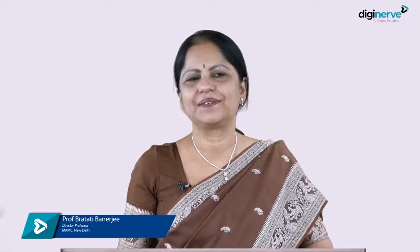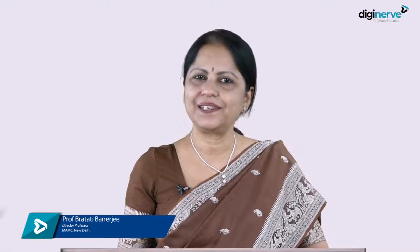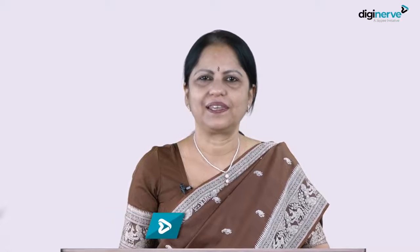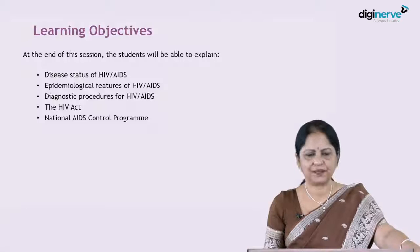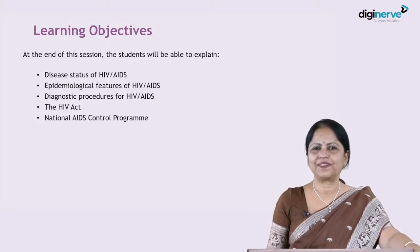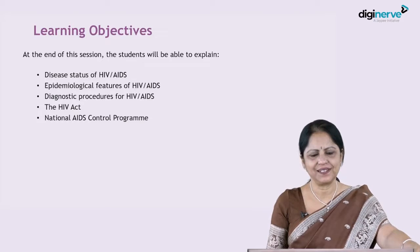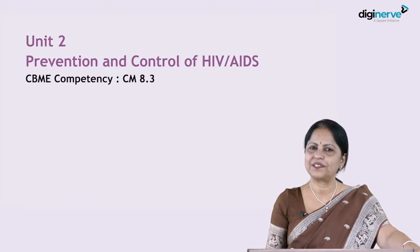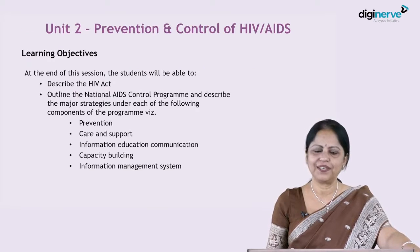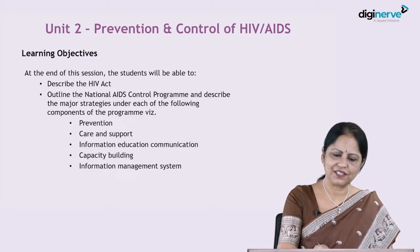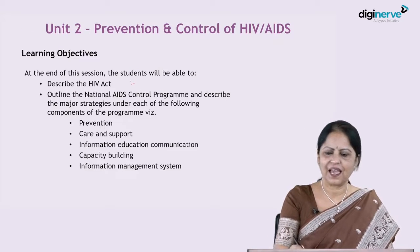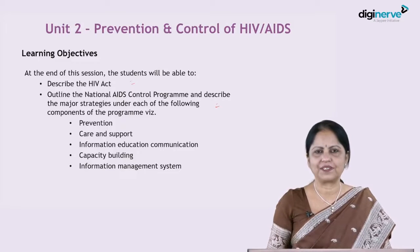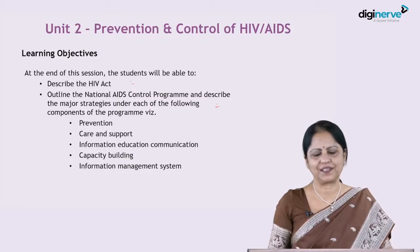Hello students, welcome to this session. This is the second unit of the topic AIDS. I have told you the objectives of this topic in the earlier session. This is the second unit: Prevention and Control of HIV AIDS, covering competency 8.3, and here I will discuss the HIV Act and the AIDS Control Program, that is, the National AIDS Control Program.